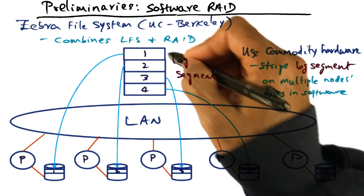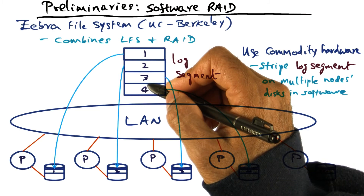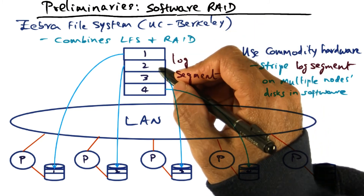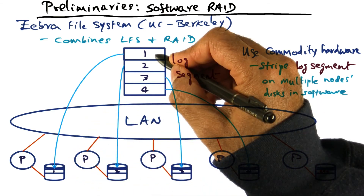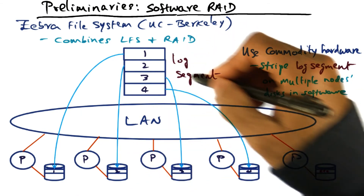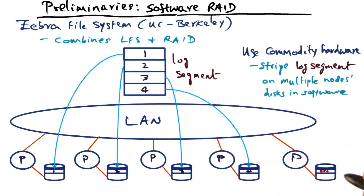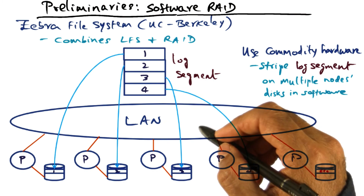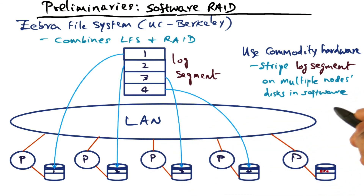If this is a log segment representing changes made to several different files on a particular client node, then software RAID will take this log segment and stripe it: part one of the log segment on one node, part two on another, part three on another, part four on another, and the ECC corresponding to these four parts into a fifth drive. That's the idea in software RAID — exactly similar to hardware RAID, except software is doing the striping of the log segment across multiple nodes available in the local area network.